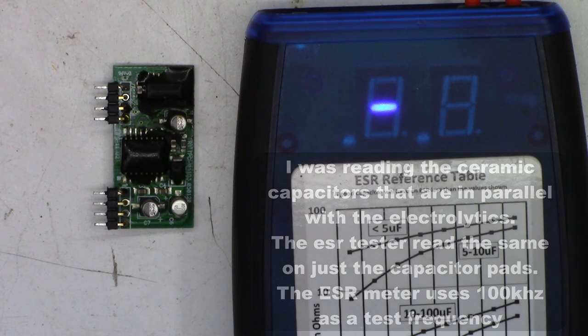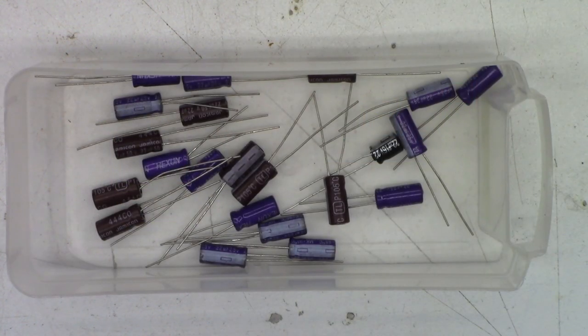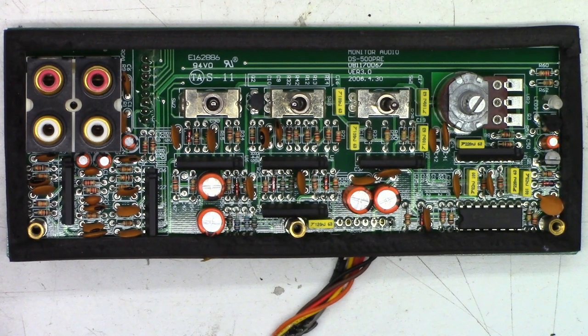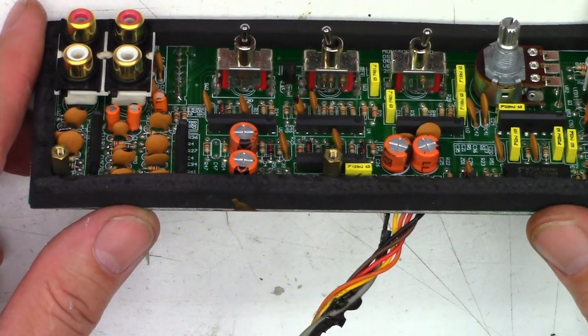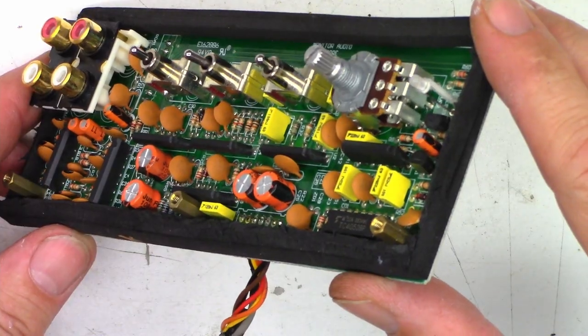Well, unfortunately, my selection of 22 microfarad capacitors is extremely low and I need to reorder because I need to replace nine of these 22 microfarad caps on all three boards combined. And as you can see, I have seven of the Jamicon 105 degrees Celsius caps. All the other ones are just some generic 85 degree caps and I really don't want to use those.